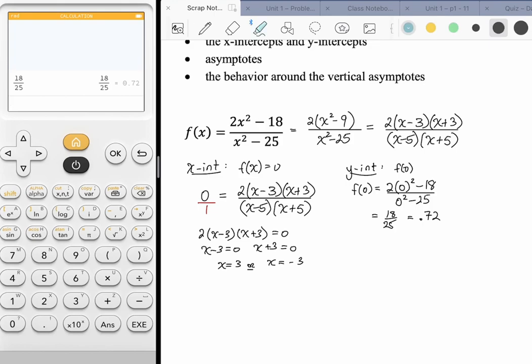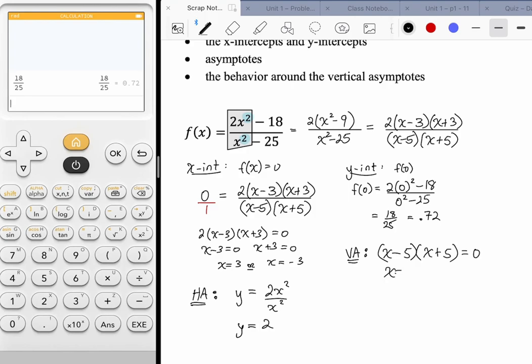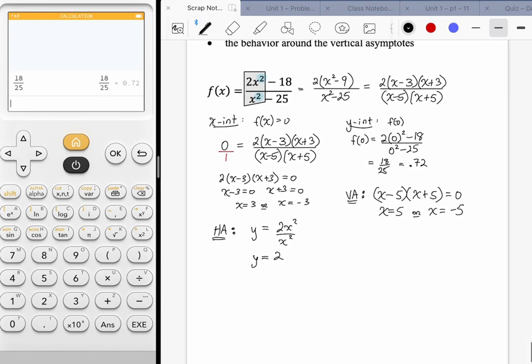The asymptotes. Looking at the power between the top and the bottom. Power of two in both cases. So for my horizontal asymptote, I'm going to take that leading term and pull it out and simplify it. So y is going to be equal to 2x² over x², which simplifies down to y equals 2. That's my horizontal asymptote. For the vertical asymptote, there's no common factor. So I'm going to take the denominator and set it equal to 0. x equals 5 or x equals negative 5.